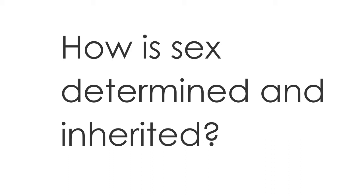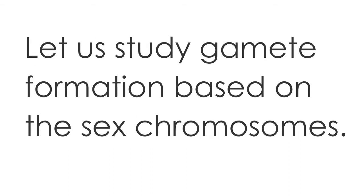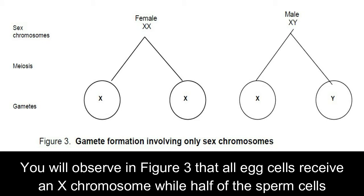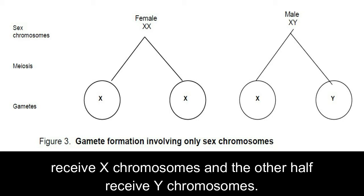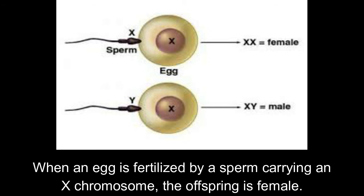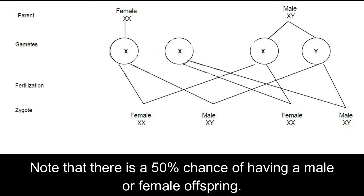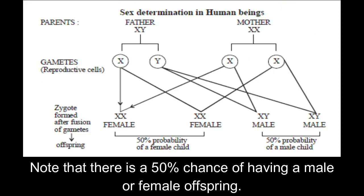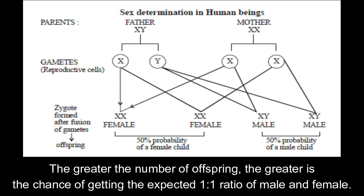How is sex determined and inherited? Let us study gamete formation based on the sex chromosomes. You will observe in Figure 3 that all egg cells receive an X chromosome, while half of the sperm cells receive X chromosomes and the other half receive Y chromosomes. If an egg is fertilized by a sperm with a Y chromosome as shown in Figure 4, the offspring is male. When an egg is fertilized by a sperm carrying an X chromosome, the offspring is female. Note that there is a 50% chance of having a male or female offspring. The greater the number of offspring, the greater is the chance of getting the expected 1 to 1 ratio of male and female.